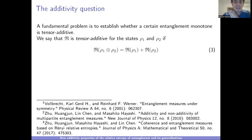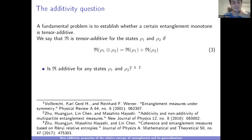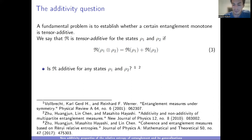Let's start with the additivity question. I have my monotone R and two states ρ₁ and ρ₂, both entangled but in tensor product with no correlations between them. I ask: is the monotone evaluated on the tensor product equal to the monotone on the first state plus the monotone on the second state? This would mean the entanglement of the whole system is just the sum of entanglements of the two systems.